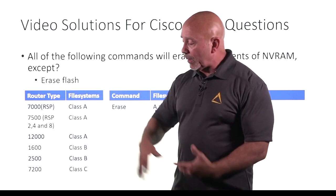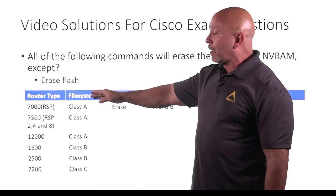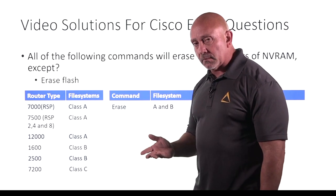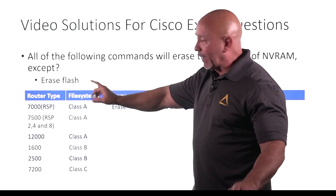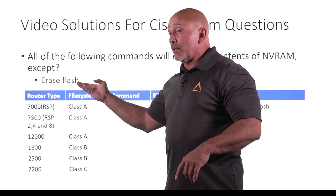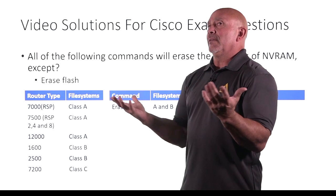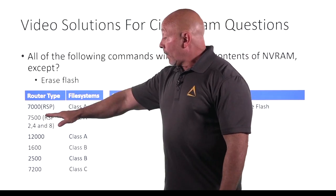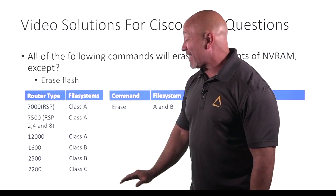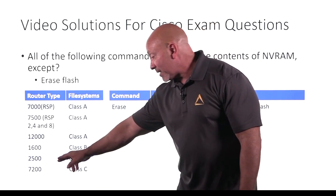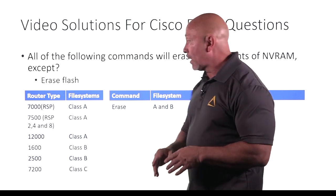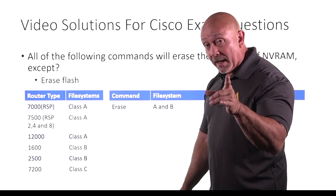I only listed a couple here — it would have been a big list. Depending on the installable file system (IFS) that the router has, commands fall under different classifications. The 7000, 7500, and 12000 series are classified as Class A; the 1600 and 2500 as Class B; and the 7200 as Class C. Different file systems support different types of commands.